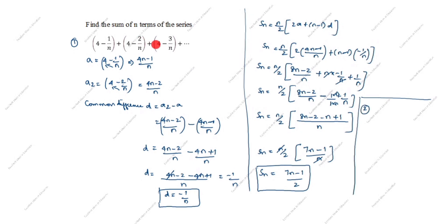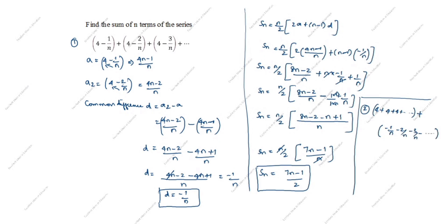For the second method, observe that 4 is common in every term. We separate the series into two parts: (4 + 4 + 4 + ... n times) plus (- 1/n - 2/n - 3/n - ...). Taking -1/n outside the second bracket leaves (1 + 2 + 3 + ...).